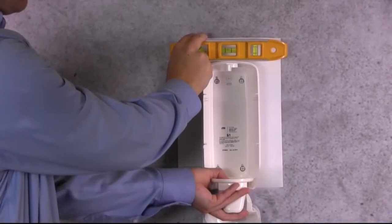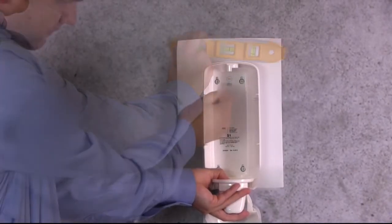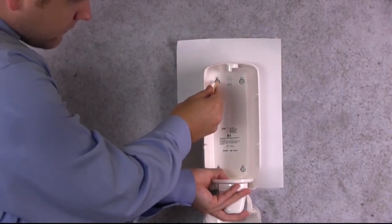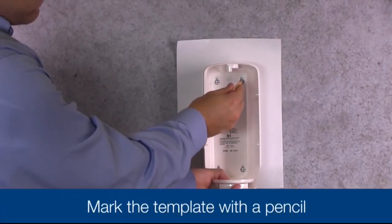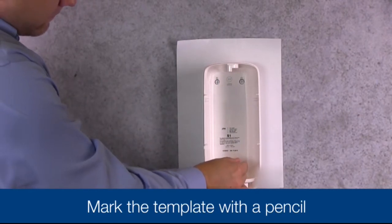Once the template is level, open your dispenser and line up the slots in the dispenser with the slots on the mounting template. Take your pencil and mark through the template onto the wall where you will be drilling.